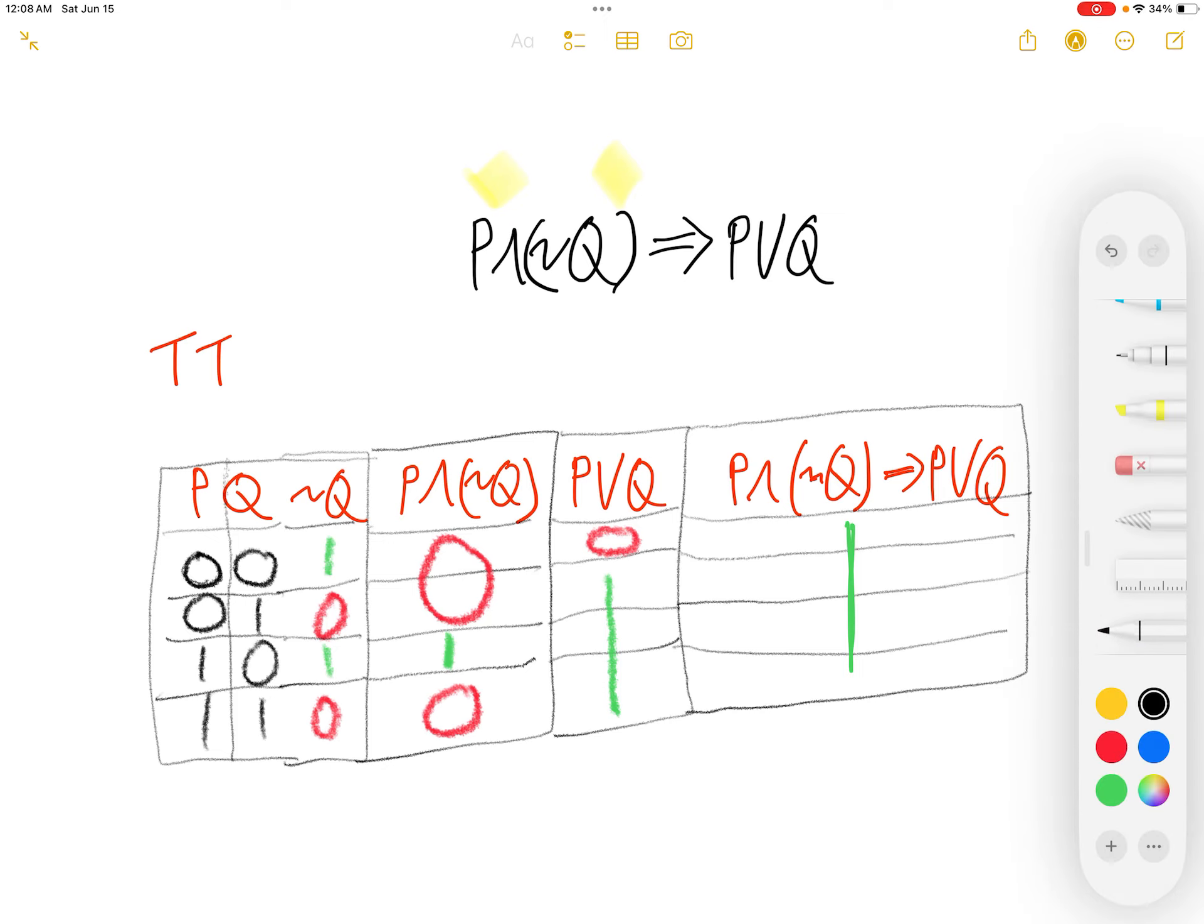Okay. Now, let's look at this column. For this column, we will be interested in the column p and column not q. So, these two columns. Okay. And the operator is and.